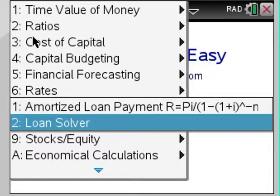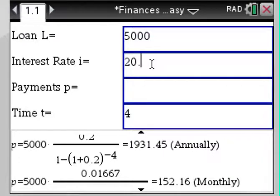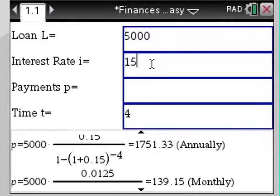For loans, we have a very cool loan solver here. Say you take out a $5,000 car loan at a rate of let's say 15% over four years.